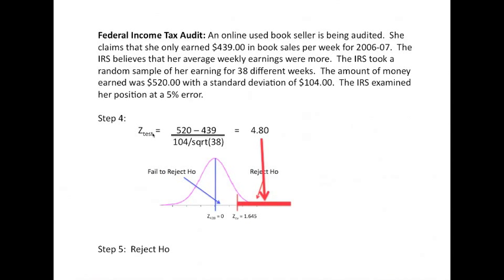Now, we calculate Z test. And it is the X bar minus Mu, 520 minus 439 divided by the standard error. And this is a mean standard error. So it is 104 S divided by the square root of N, which is 38. And we come up with 4.8. So our Z test is 4.80, which if we look at it in light of the picture falls in the reject region.